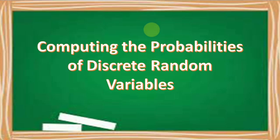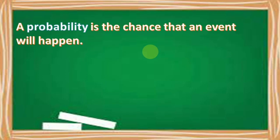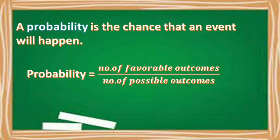We are going to discuss computing the probabilities of discrete random variables. Let us first define a probability. A probability is the chance that an event will happen. When we say probability, we are talking of the happening of an event that is not planned, meaning it happens accidentally. To get the probability of an event, we divide the number of favorable outcomes by the number of possible outcomes.